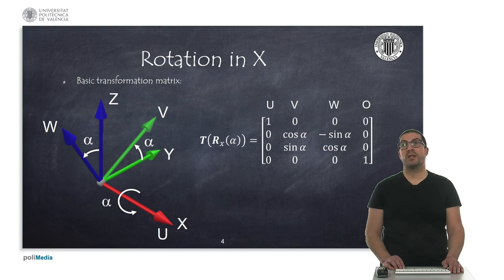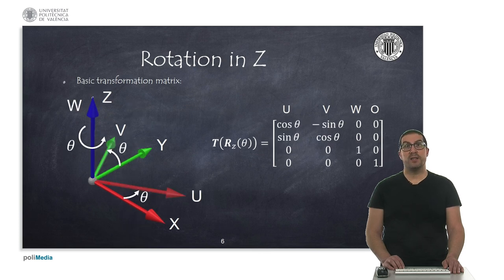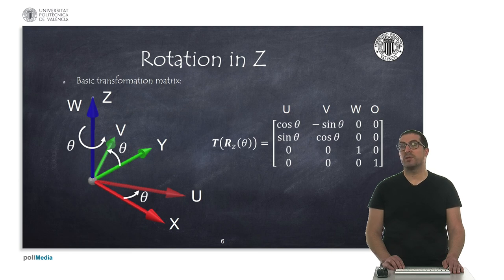Please note that in each of the rotation operations, the column and row related with the corresponding rotation axis is filled with zeros, but the pivoting element contains the one. Similarly, we can obtain the basic transformation matrix with respect to a rotation around the y-axis, and in the same way the transformation matrix with respect to a rotation around z.